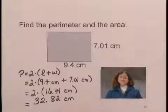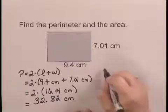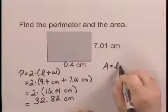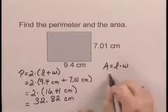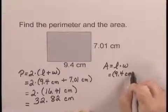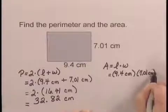To find the area, we will again start by writing the formula for the area of a rectangle. A equals length times the width. And we substitute 9.4 centimeters for the length and 7.01 centimeters for the width.